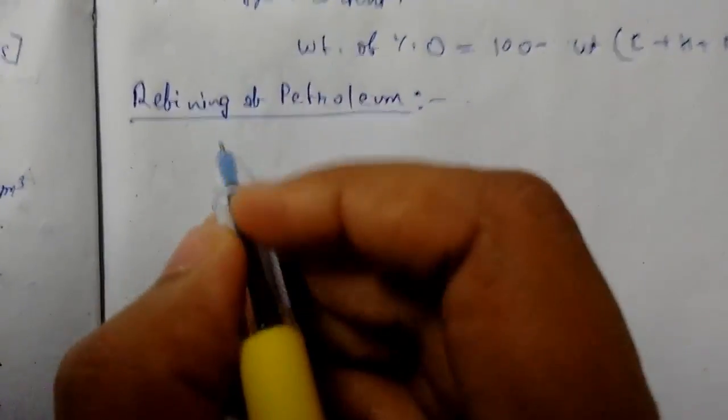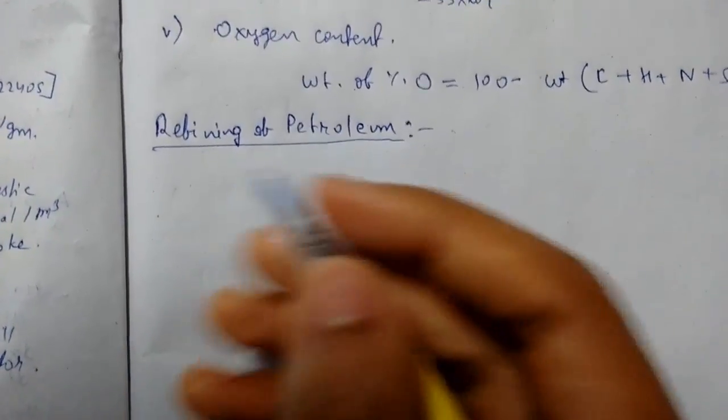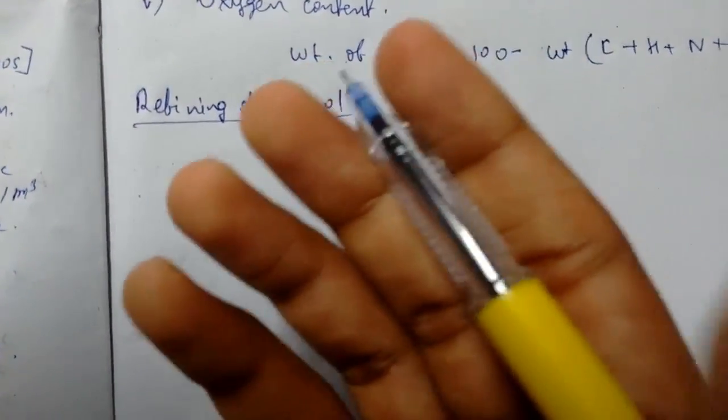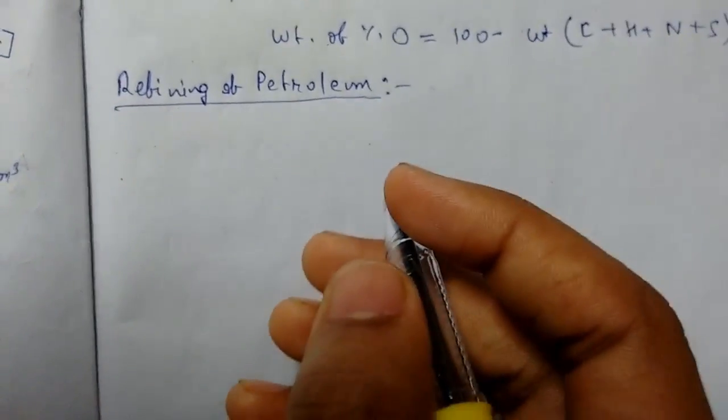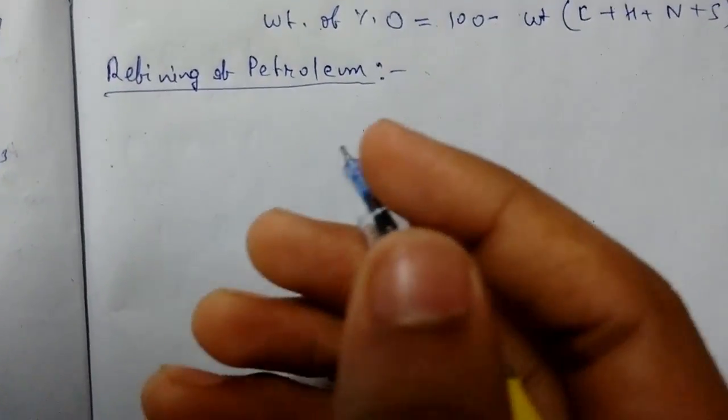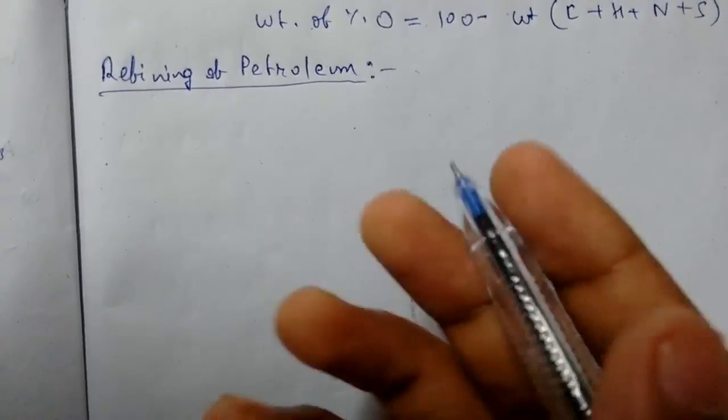Now we will study refining of petroleum. The crude oil is separated into various fractions by fractional distillation. The resultant fractions are then subjected to purification to get the useful products, and the total process is called as the refining.